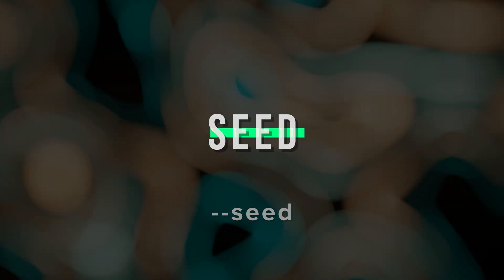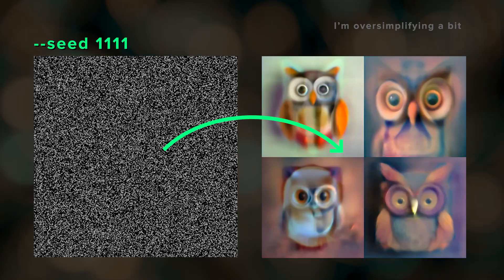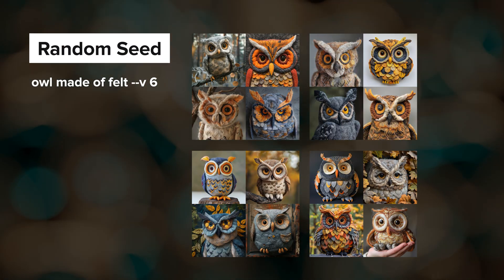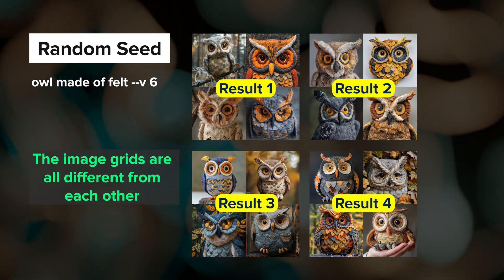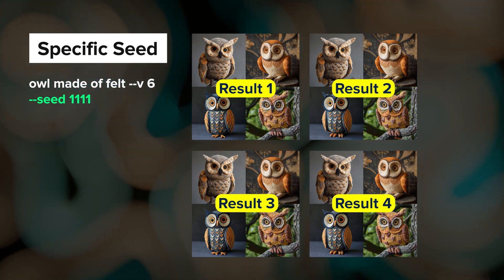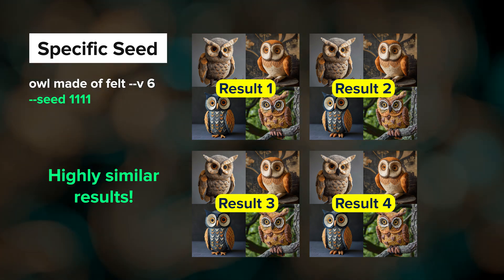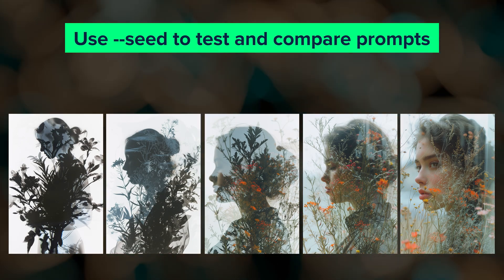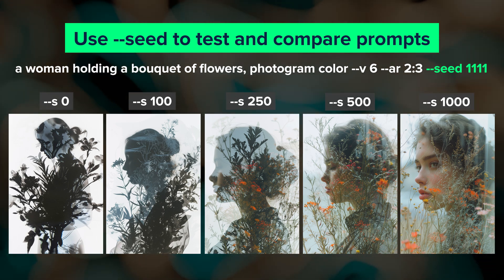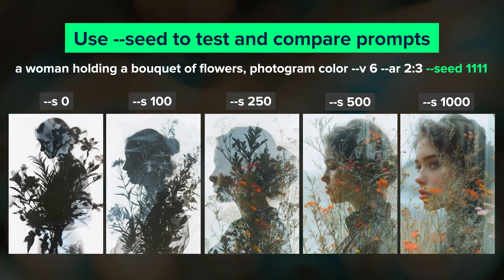Next we have the seed parameter. Each Midjourney job starts with a canvas of visual noise, and each noise pattern is linked to a seed number — the initialization point for your image grid. When you submit a job, a seed number is randomly assigned by default. Using --seed with a specific number, like seed 1111, means running the same prompt multiple times gives similar results. Seed is really useful for testing how parameter values or other prompt modifications affect results, and it's possible you may never need it, but it's there if you do.